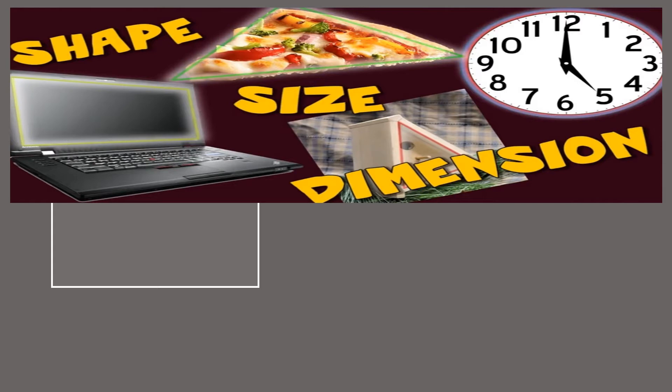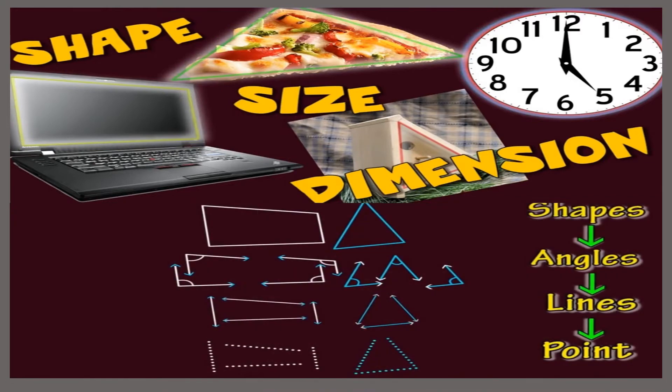You know that a rectangle is formed by four line segments and four angles. Similarly, a triangle is formed by three line segments and three angles. Thus, in our surroundings, we can see some basic concepts of geometry in all things — that is point, line, line segment, ray, and angles.